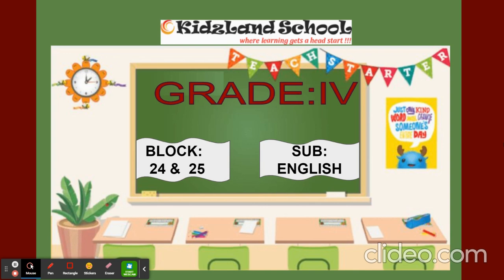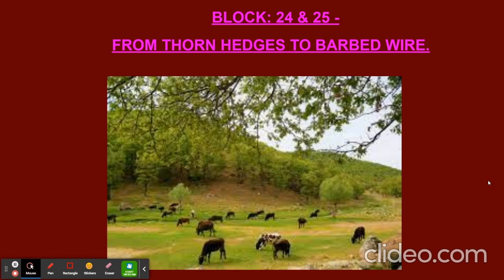If you see the picture in the content book page number 141, you can see animals in the open area covered with wire — that is their safeguard. They are not going to move around from that place. We'll see 'From Thorn Hedges to Barbed Wire' by Mary Silver Tuner. On page number 142, the natural environment shows animals living in nature — that's their natural habitat, the place where they live.